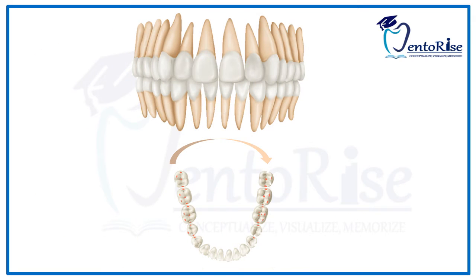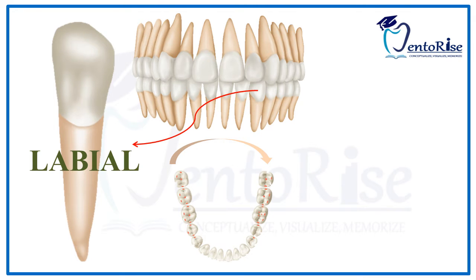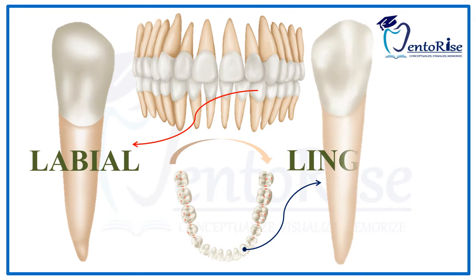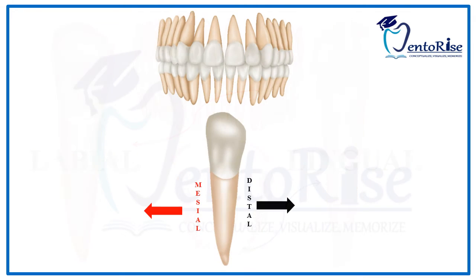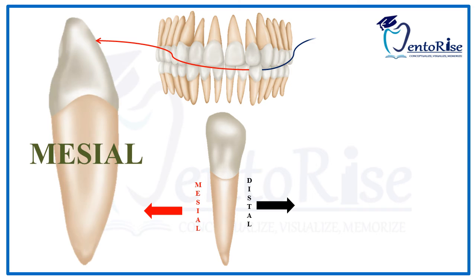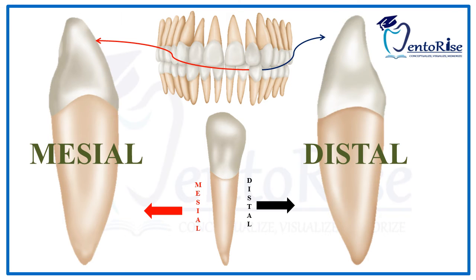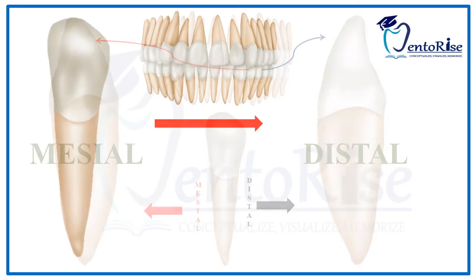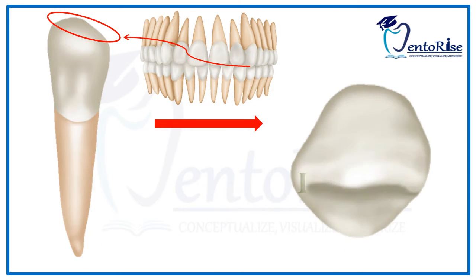The dental anatomy of a permanent mandibular canine will be discussed under 5 headings: the labial aspect, the lingual aspect, the mesial aspect, the distal aspect, and the incisal aspect.